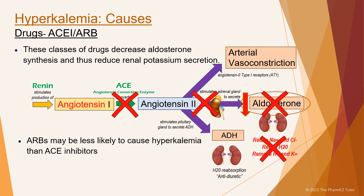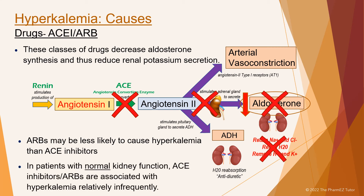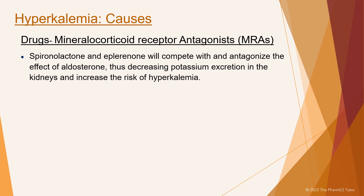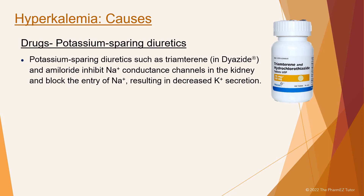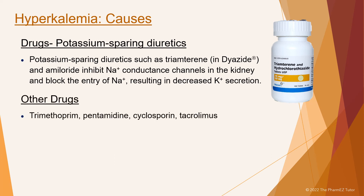ARBs may be less likely to cause hyperkalemia than ACE inhibitors. In patients with normal kidney function, ACE inhibitors or ARBs are associated with hyperkalemia relatively infrequently. Mineralocorticoid receptor antagonists include spironolactone and eplerenone. These drugs compete with and antagonize the effect of aldosterone, decreasing potassium excretion in the kidneys and increasing the risk of hyperkalemia. Potassium-sparing diuretics include triamterene, hydrochlorothiazide combination, and amiloride. These drugs inhibit sodium conductance channels in the kidney and block sodium entry, resulting in decreased potassium secretion. Other drugs that may cause hyperkalemia include trimethoprim, pentamidine, cyclosporine, and tacrolimus.